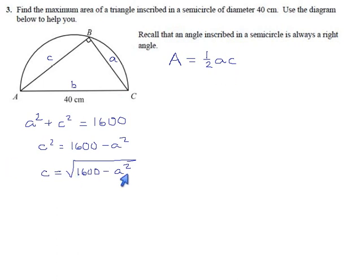Anywhere where there's a c, I'm going to put root 1600 minus a squared, or 1600 minus a squared to the one-half power. And now we get to take the derivative of that, which is going to sting a little, but we can do it. It's a product. It consists of one-half a times blah blah blah to the one-half, and so we have to do first d second plus second d first to get our derivative.